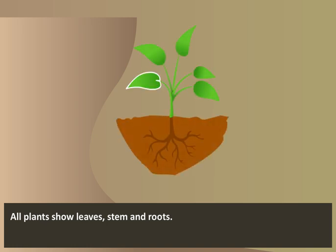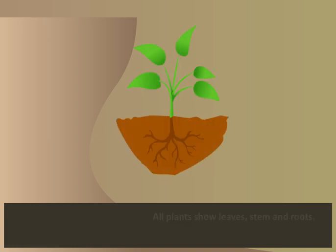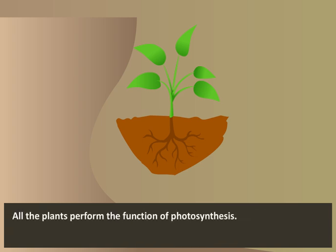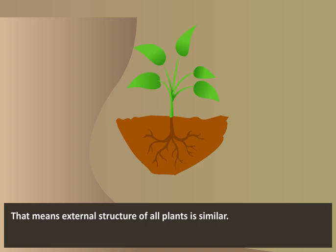All plants show leaves, stem and roots. Leaves are green in color due to the presence of chlorophyll. All plants perform the function of photosynthesis. That means the external structure of all plants is similar.